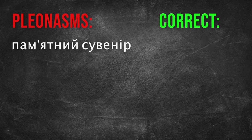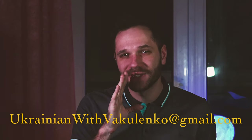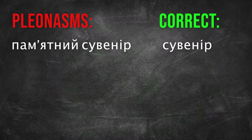Another example of a pleonasm: «Пам'ятний сувенір» — commemorative souvenir. It is correct to say just «Сувенір», because souvenir already means that it is commemorative. Also be attentive with the word «Пам'ятний» — it has an apostrophe. If you would like to practice more words with apostrophe, you can buy a video lesson where I will show you exactly how to pronounce these words properly. Information is in the description.